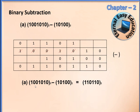So the answer is 1001010 minus 10100 equals 110110. Just to verify by converting to decimal: 1001010 is equivalent to 74 and 10100 is equivalent to 20. So 74 minus 20 is 54, and 54 is equivalent to this binary number. So the method of subtraction is correct.